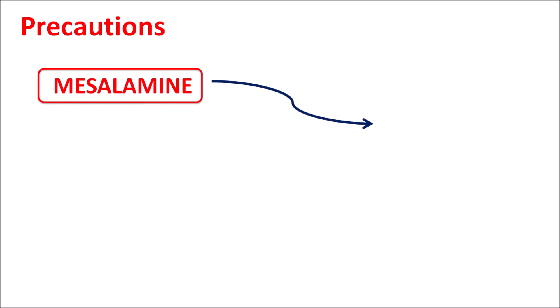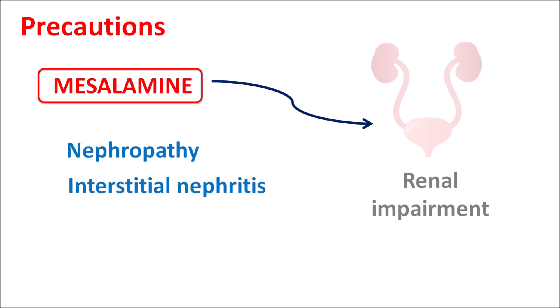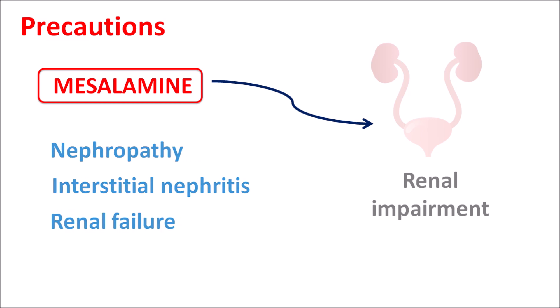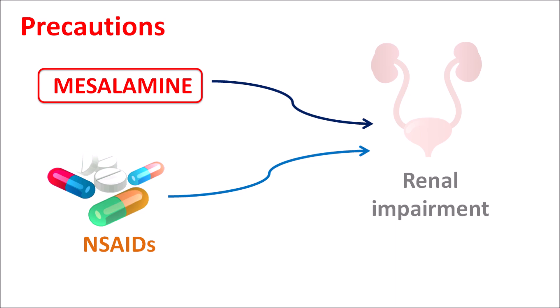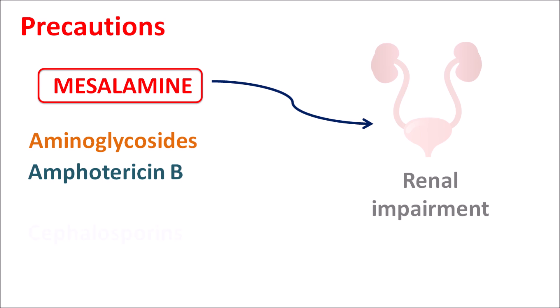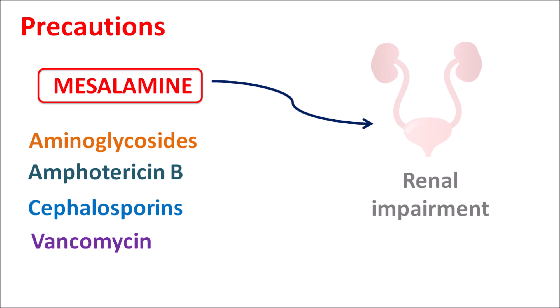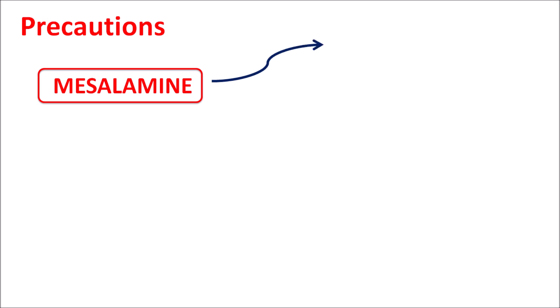One important precaution of mesalamine is that it can produce renal failure. This renal impairment may manifest as nephropathy, interstitial nephritis, and ultimately renal failure. In patients with any history of renal impairment, mesalamine should be given carefully. NSAIDs can also produce renal impairment, so they should be used cautiously with mesalamine. Additionally, many nephrotoxic drugs — such as aminoglycosides, amphotericin B, cephalosporins, penicillins, vancomycin, and cisplatin — can produce nephrotoxicity and should be carefully co-administered with mesalamine to avoid further renal impairment.